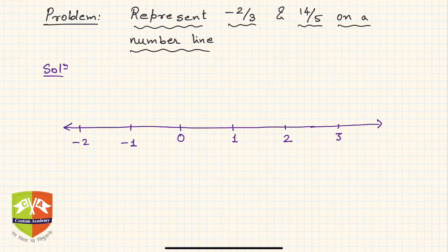How to find -2/3 between 0 and -1? The denominator is 3, so you have to divide that interval into three parts. First of all, what is step 1? Step 1 is to identify the segment.